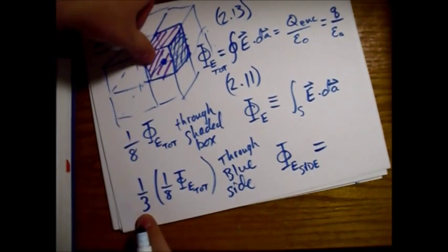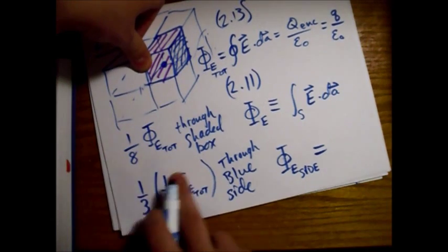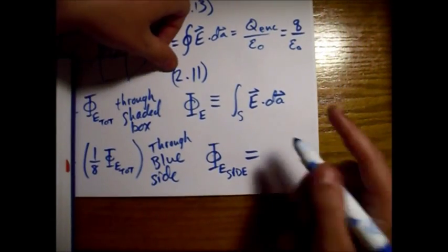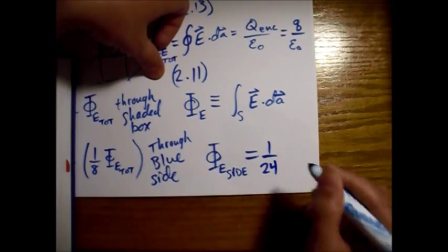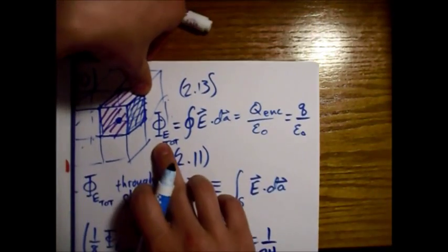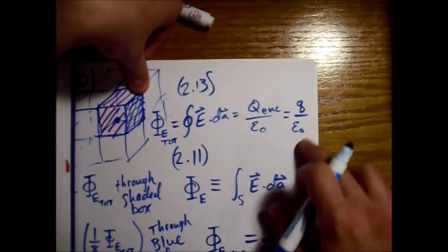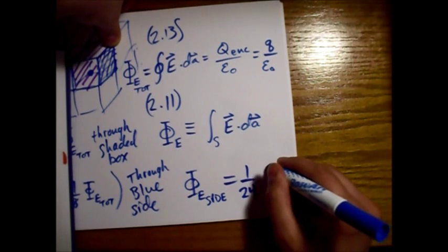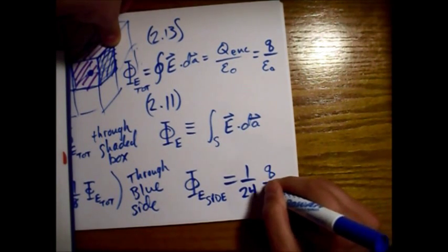Alright, it's one third of one eighth of the total flux, which is one twenty-fourth of the total flux. And the total flux up here is just Q over epsilon naught. So that is our final answer.